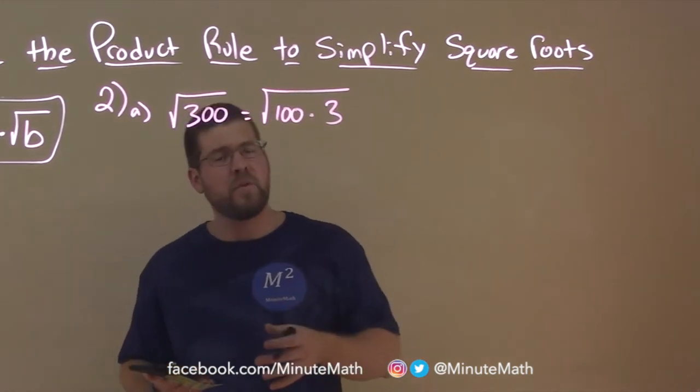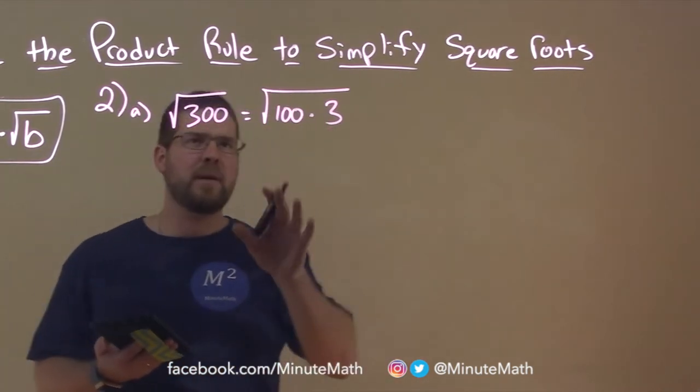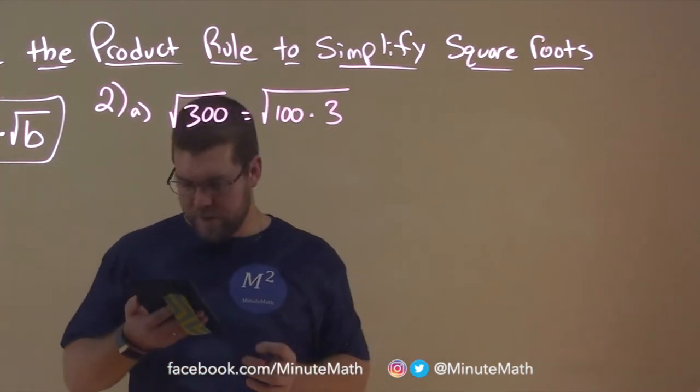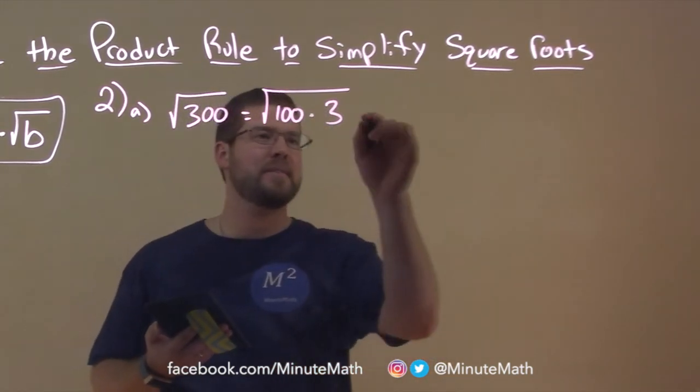Now in our previous video I kind of broke it down using a tree, but this is essentially doing the same thing. But now we have a rule for it. Okay, 100 times 3. And now we can separate each one of these individually. Square root of 100 times the square root of 3.